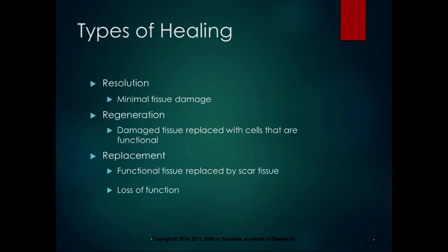Depending on where the regeneration is, it could be functional tissue doing you good. In the skin, because epithelial cells are constantly regenerating, you can get functional areas of regeneration, and the same inside the gut. Replacement is where functional tissue is replaced by scar tissue, and you do get loss of function with that. Scar or fibrous tissue formation takes place when there's extensive tissue damage or you have cells incapable of mitosis, like in the brain or in the heart.